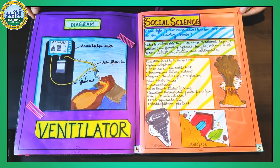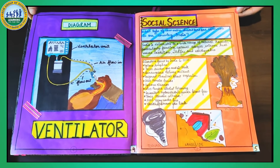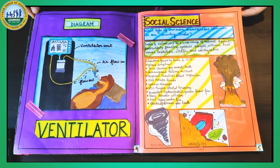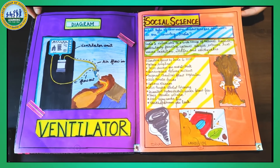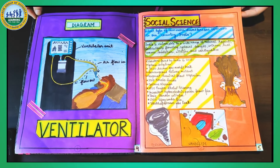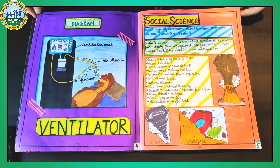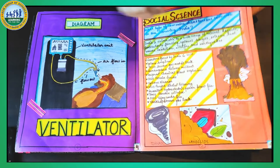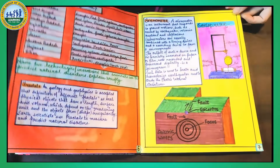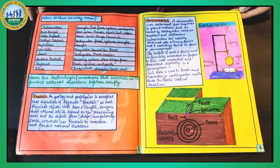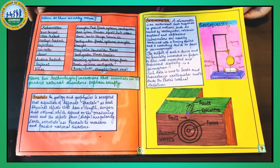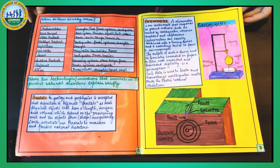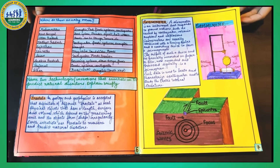Coming to social science, it shows some common disasters faced by our country India, including railway accidents, Kerala floods, cyclones, and Vijaywada fires. States such as Maharashtra, West Bengal, Rajasthan, and Karnataka are some of the states which are prone to natural disasters.